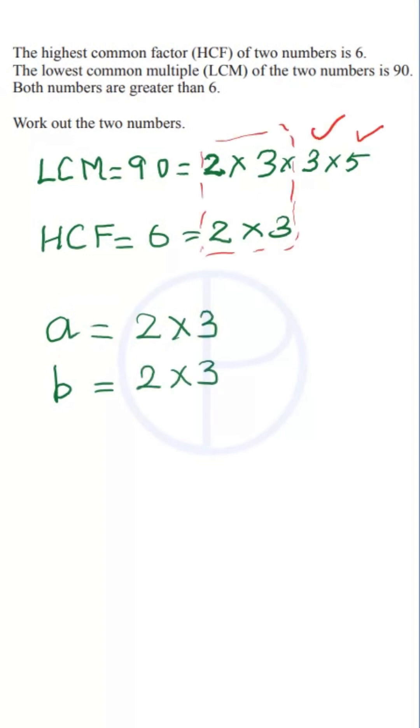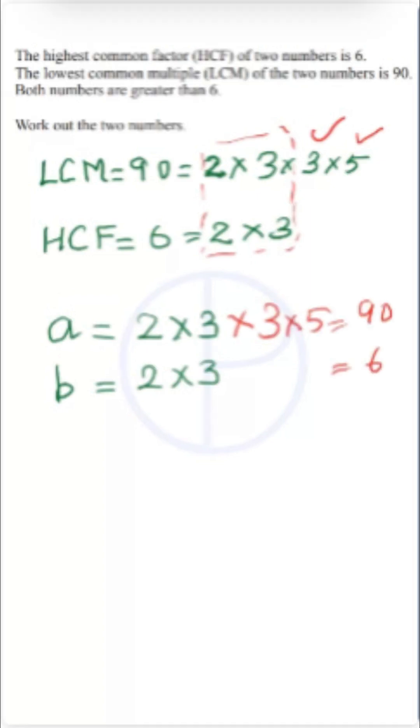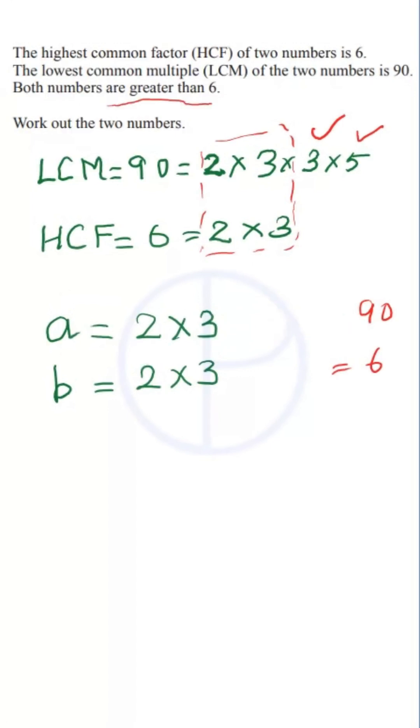Let's write it as 2 times 3. Now in our LCM, 3 and 5 are left, so we have to place 3 and 5. Now we cannot place both in one place, that is in a or in b. If we place both, one number will become 6 and the other number will become 90, which will contradict the point that both the numbers are greater than 6. So place 3 here and 5 here.